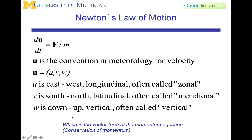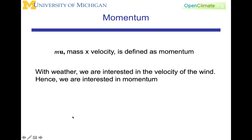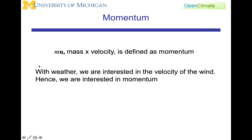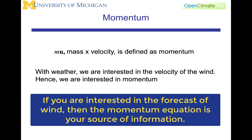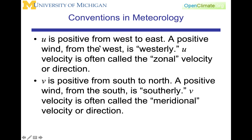This is the vector form of the momentum equation, or the conservation of momentum. MU — mass times velocity — is the definition of momentum. With weather, we are frequently interested in the velocity of the wind, hence we are interested in momentum. We are interested in wind, temperature, and precipitation as primary outputs of a weather forecast. Hence, U, the velocity, and the momentum equation are central to weather and weather forecasting.